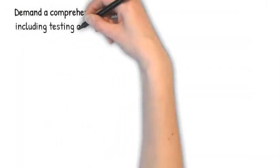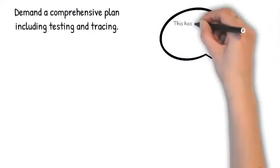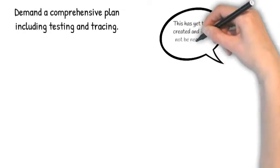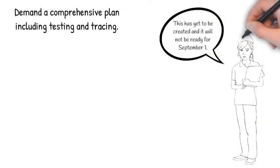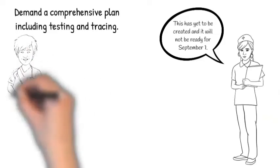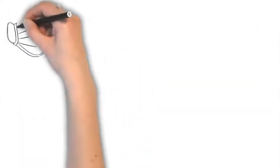Demand a comprehensive plan, including testing and tracing. This is yet to be created and it will not be ready by September 1. Without this in place, it'll be impossible to know if there's community transmission happening from the classroom.